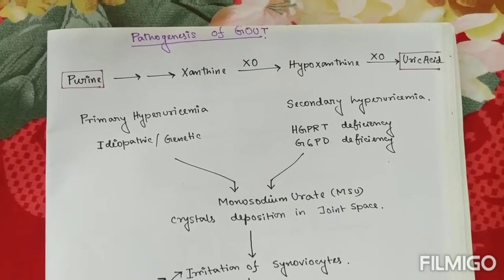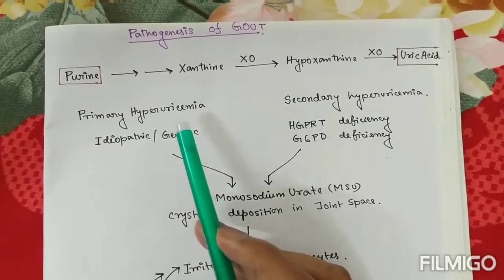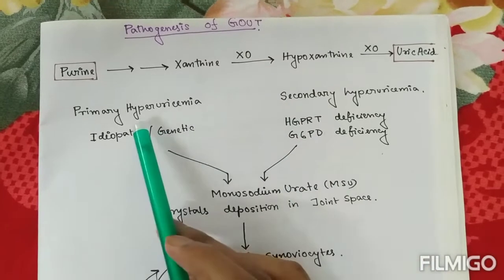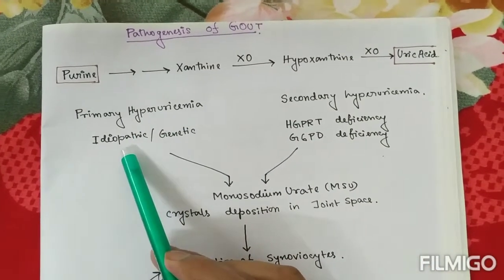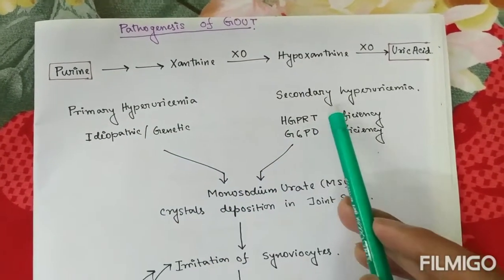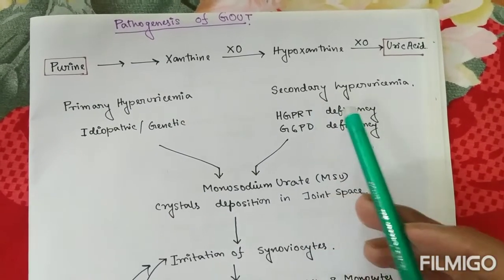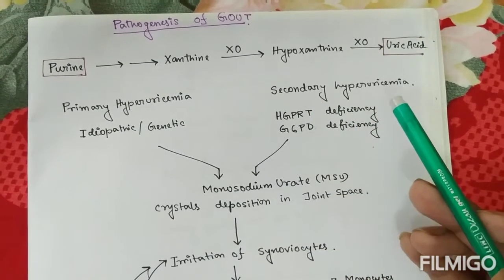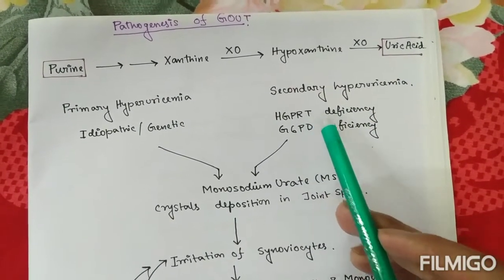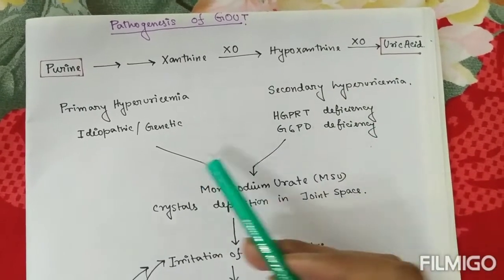The causes of hyperuricemia can be divided into primary and secondary groups. Primary hyperuricemia is mainly idiopathic or genetic, while secondary hyperuricemia is mainly due to some enzyme deficiency, like HGPRT deficiency or glucose-6-phosphate dehydrogenase deficiency.